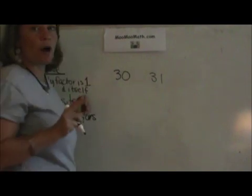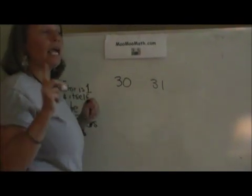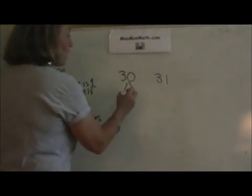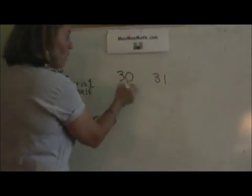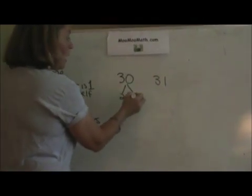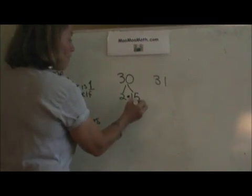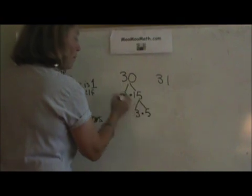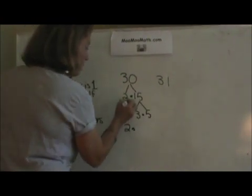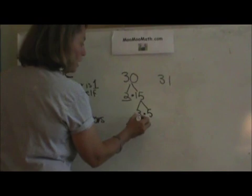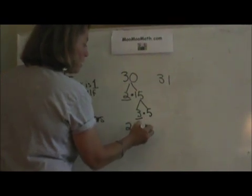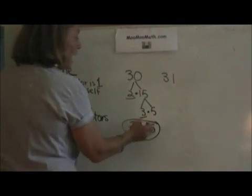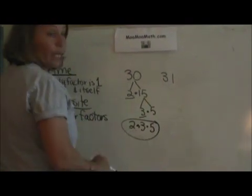30 is an even number, so you know automatically it is not a prime number because it always has a factor of 2. You can start with your smallest factor, 2, and 2 times 15, and that factors again to 3 times 5. So if I write my prime factorization, I have 2, because that is the bottom of the tree, times 3 times 5, and there is my prime factorization. I have other factors besides 30 and 1.